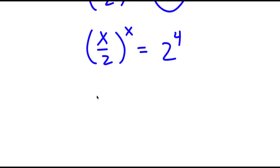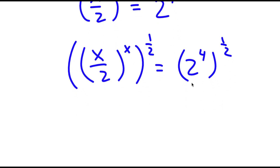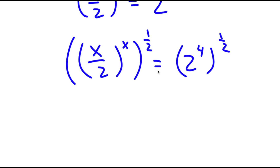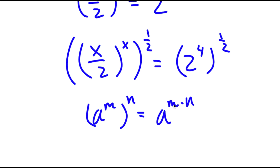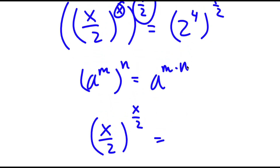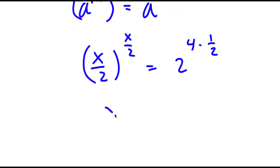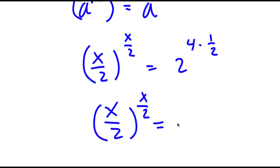Now I'm going to take the power of 1 half on both sides. So I have x over 2 to the power of x to the power of 1 half is equal to 2 to the power of 4 to the power of 1 half. If I have something in the form a to the power of m to the power of n, this equals a to the power of m times n. So x over 2 to the power of x to the power of 1 half — I can multiply x and 1 half — giving x over 2 to the power of x over 2 is equal to 2 to the power of 4 times 1 half, which is 2 to the power of 2.